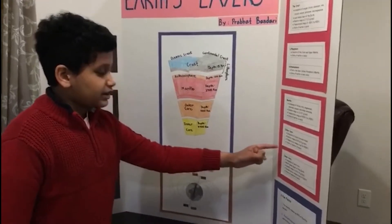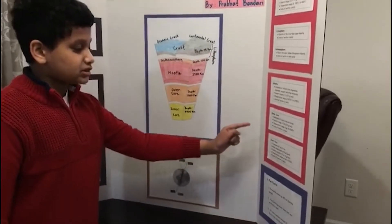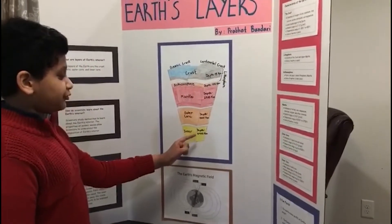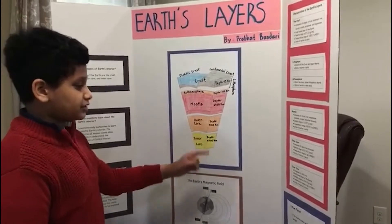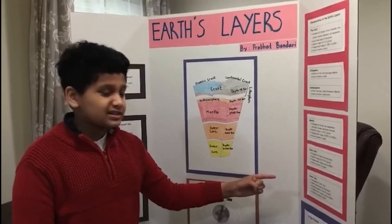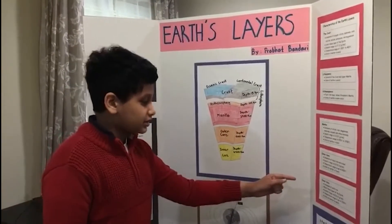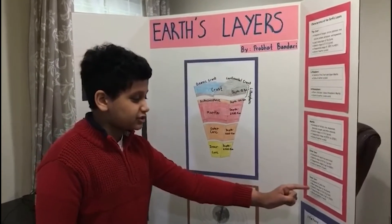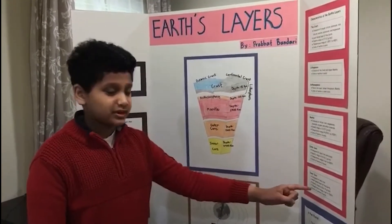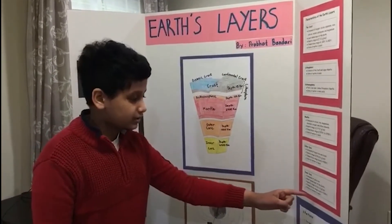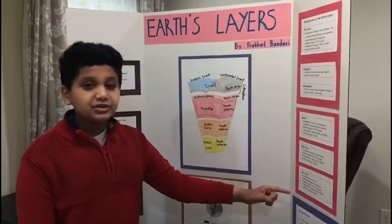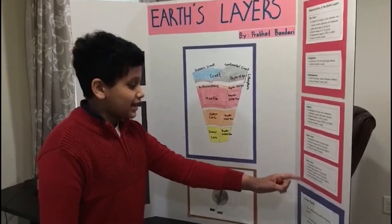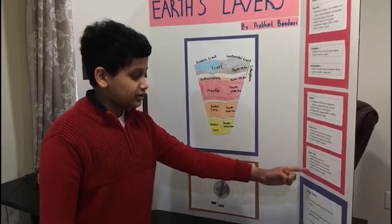The inner core is composed of solid iron. Its depth is 6,400 kilometers, and the inner core is the most dense layer of the Earth. Its density range is 12.6 to 13 grams per centimeters cubed, its temperature range is up to 7,200 degrees Celsius, and its state of matter is solid.